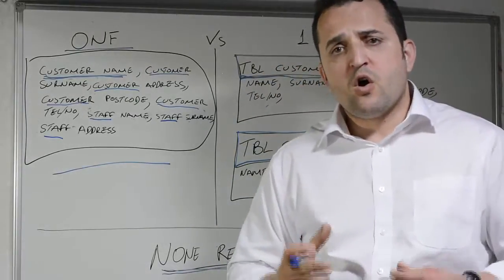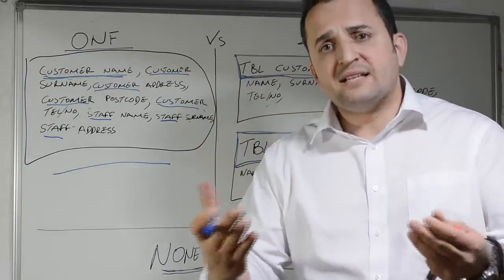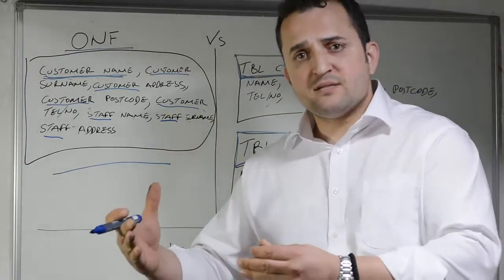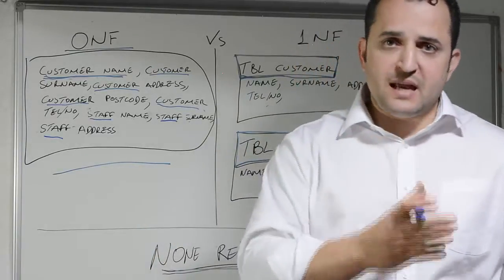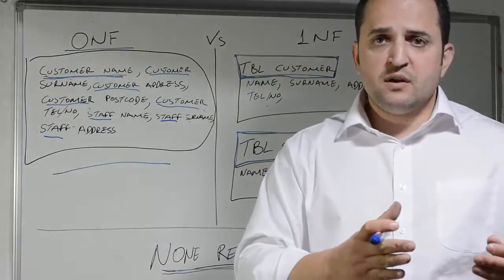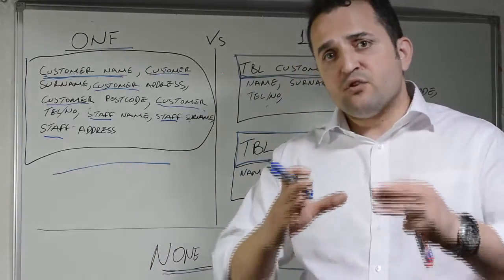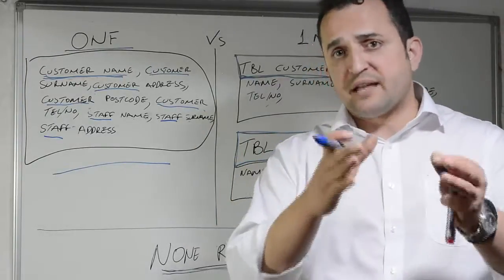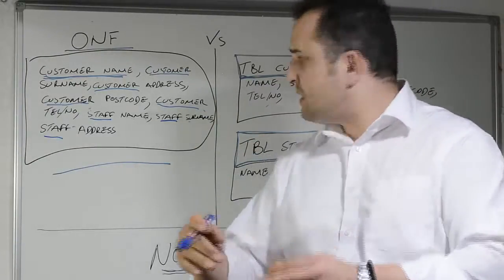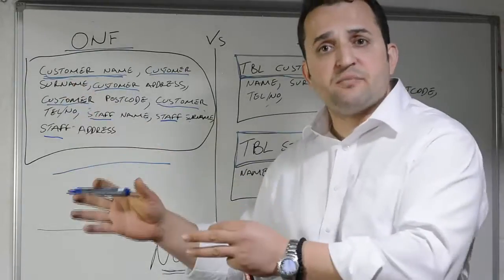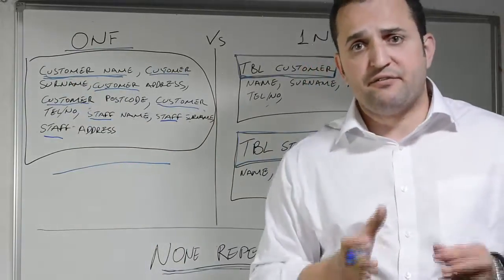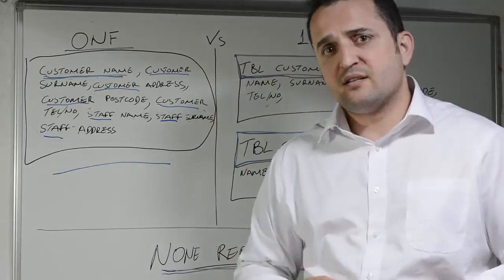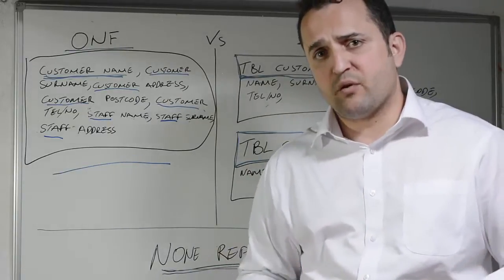Tables are otherwise known as entities. Some people will call them entities and some people will call them tables. If you understand that an entity is a table and a table is an entity, and that a field name is an attribute and an attribute is a field name, then the rest of the process is going to be straightforward.